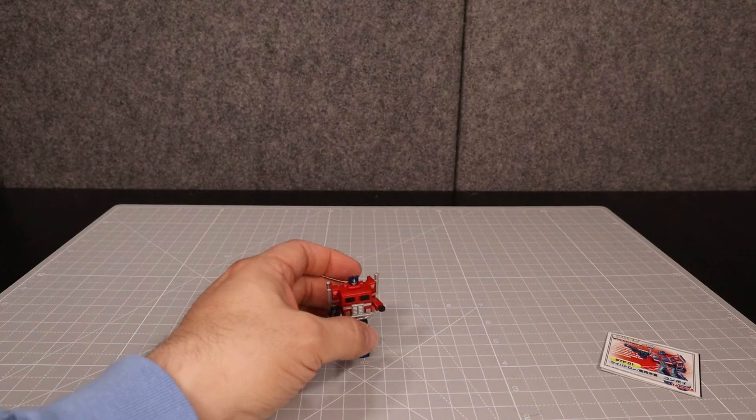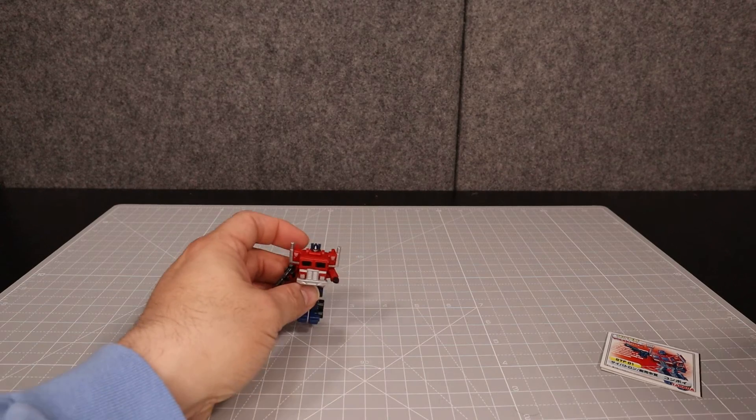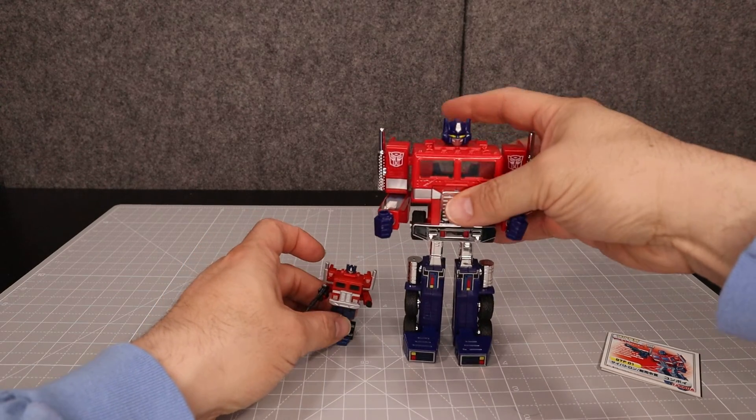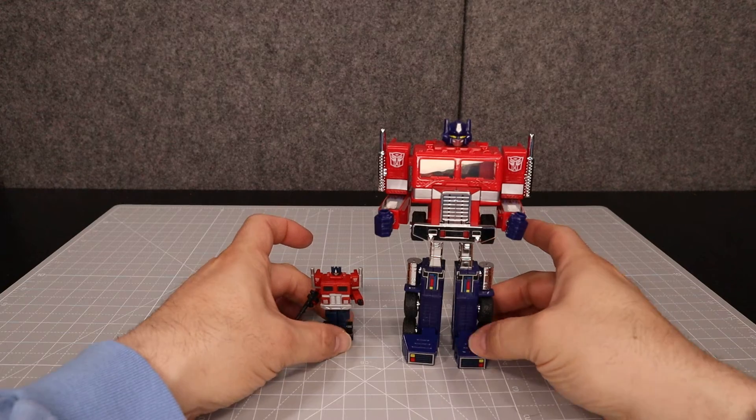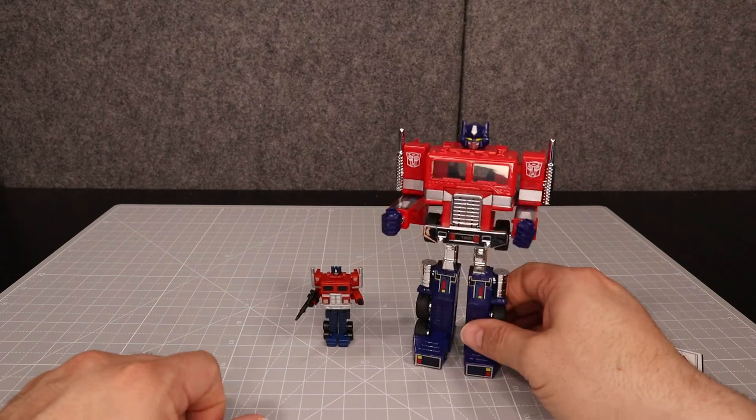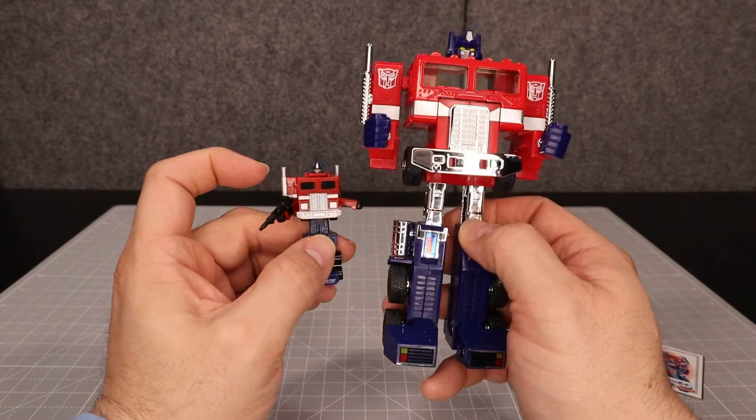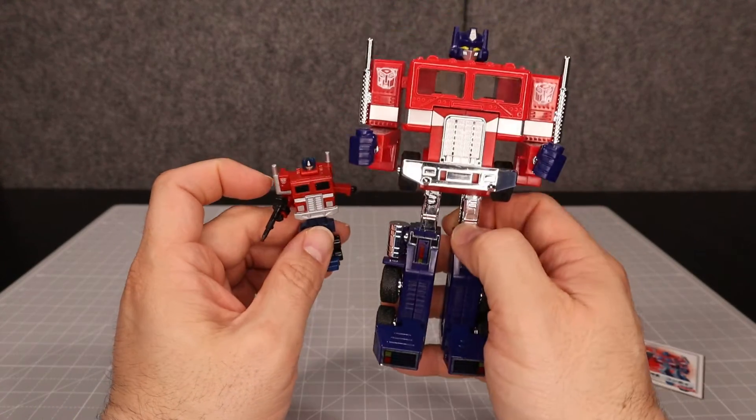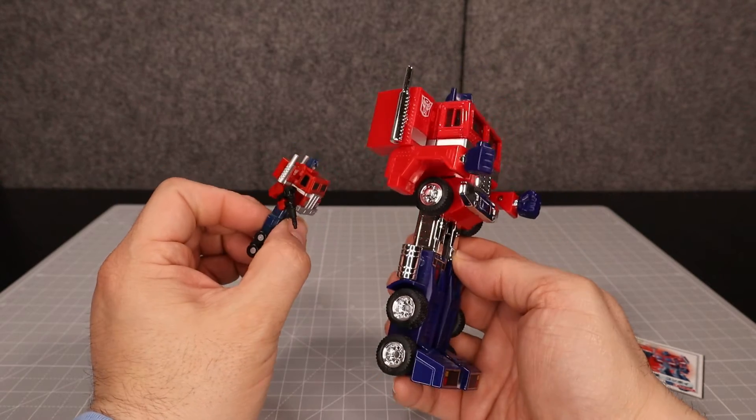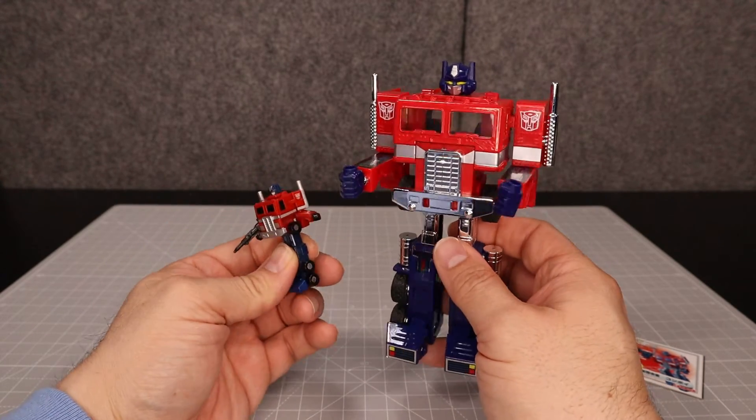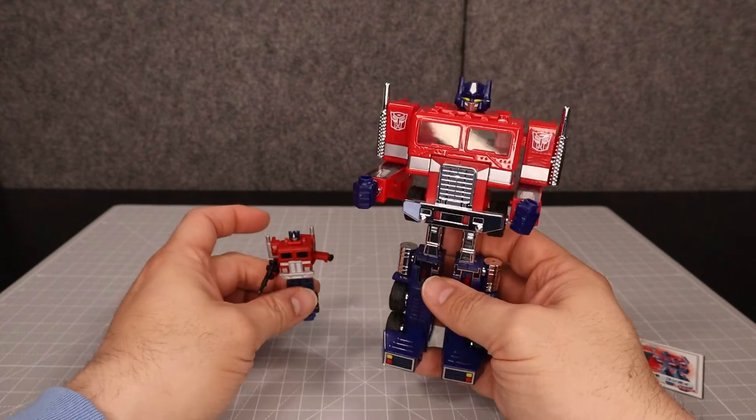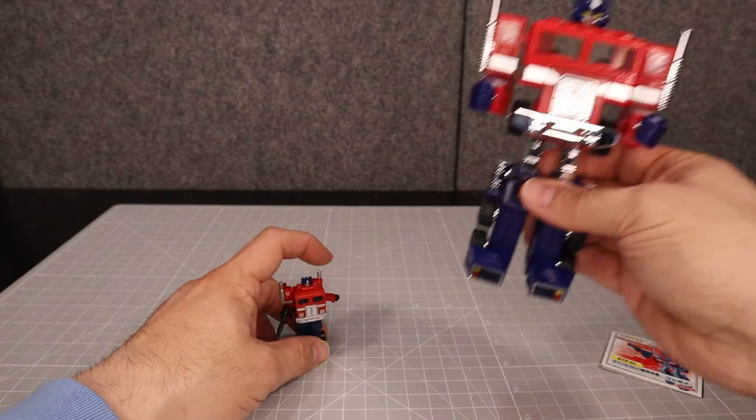And to compare him, here he is with the reissue Optimus Prime, and you can see the size scale here with that. So that's what he looks like. You can see they just left the headlight parts there, so it's kind of interesting. But yeah, that's what it looks like.